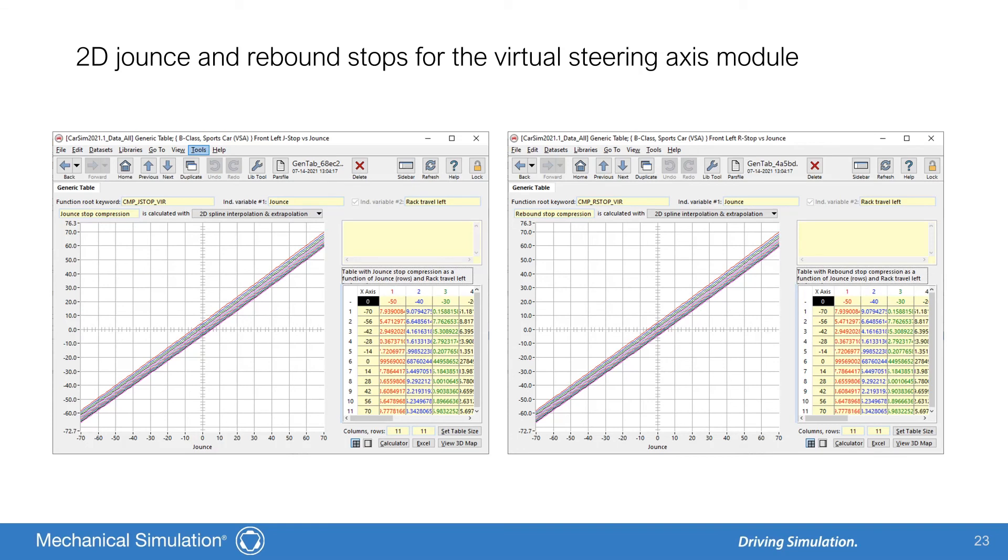Moving on, as of 2021.1, the CarSim virtual steering axis suspension now supports 2D tables of jounce and steering rack travel for the jounce and rebound stop kinematics. Previously, these could be entered only as 1D tables of jounce. The additional relationship with rack travel allows the jounce and rebound stops to potentially contribute to the rack force from the tie rods. The two example vehicles in CarSim that use the virtual steering axis, B-Class Sports Car VSA and D-Class Sedan VSA, have been updated to include 2D jounce and rebound stop data.